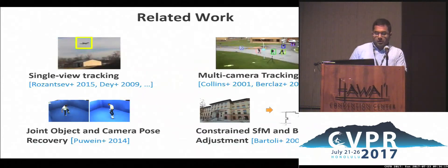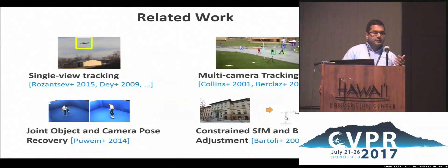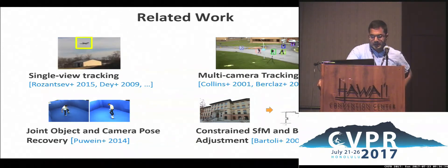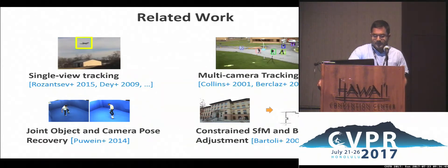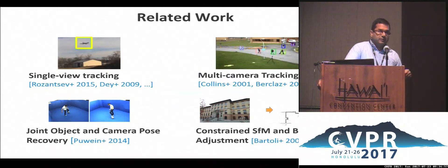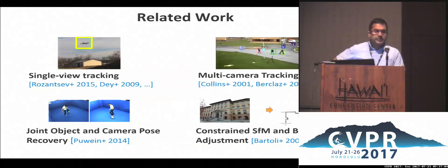There's a lot of work in computer vision on tracking in single as well as multiple views. Some people have looked into detecting aircraft in single video, but those methods are really difficult to extend to recovering 3D information about the flying object. Multicamera systems have been studied a lot, but most work looks at tracking objects on the ground and often requires good calibration to start with. We were motivated by some recent work on joint object and camera pose recovery, which led us to solve the tracking, detection, reconstruction, and calibration problem in a joint framework. Similar to constrained structure-from-motion and bundle adjustment, we incorporate geometric priors into the formulation.